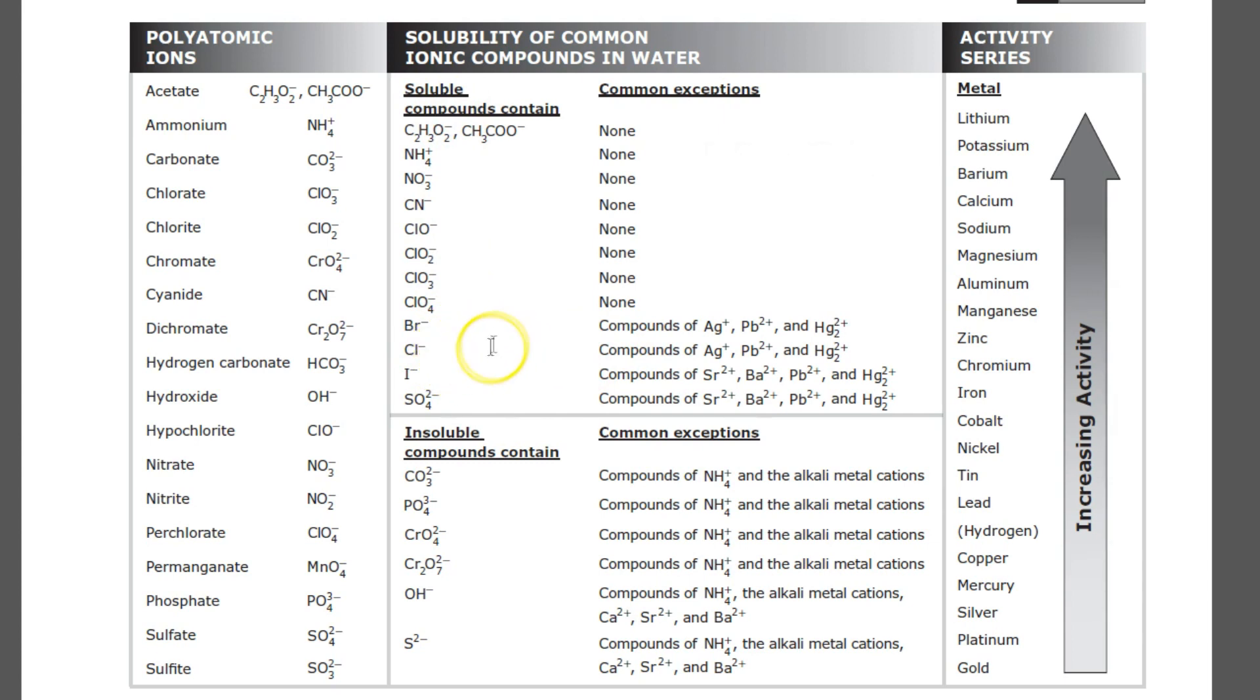Our next example is aluminum phosphate. Well, phosphate is down here on the bottom. And so phosphate is usually insoluble except when bonded to NH4 and the alkali metals. And if you recall, the alkali metals is anything in group one on the periodic table. Well, aluminum is not one of those exceptions. Therefore, aluminum phosphate follows the rule and it is insoluble.